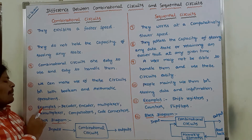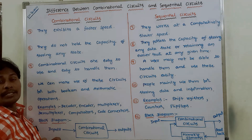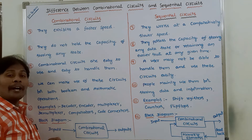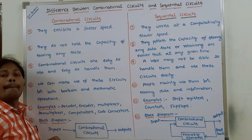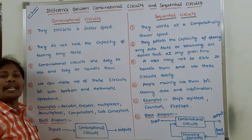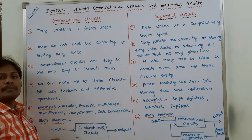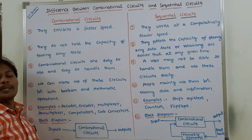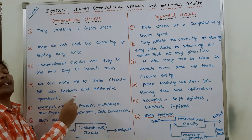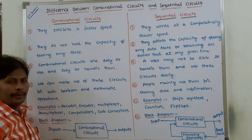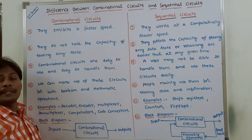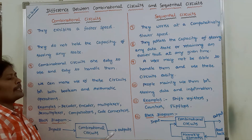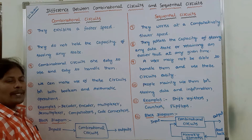Eleventh point, the examples for combinational circuits are half adder, full adder, decoder, encoder, multiplexer, demultiplexer, comparator, and code converters. The examples for sequential circuits are shift registers, counters, and flip-flops.